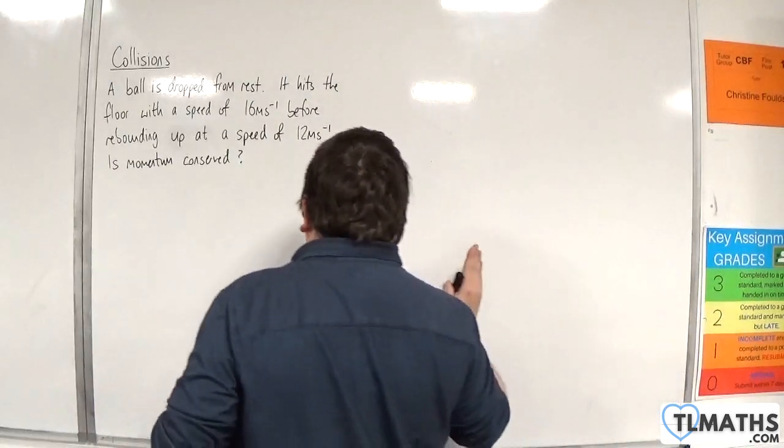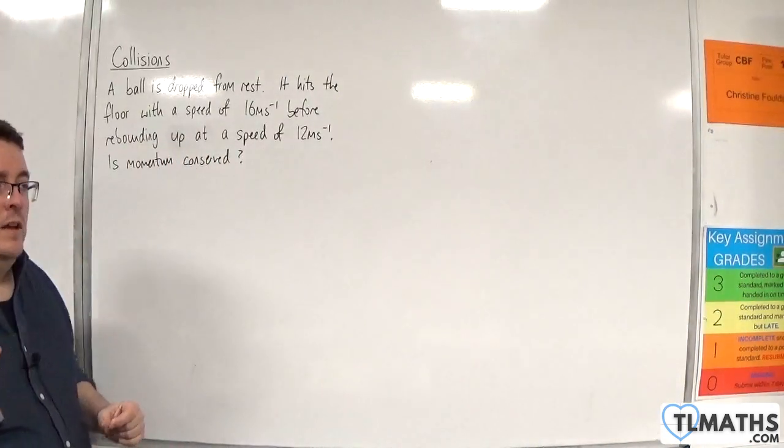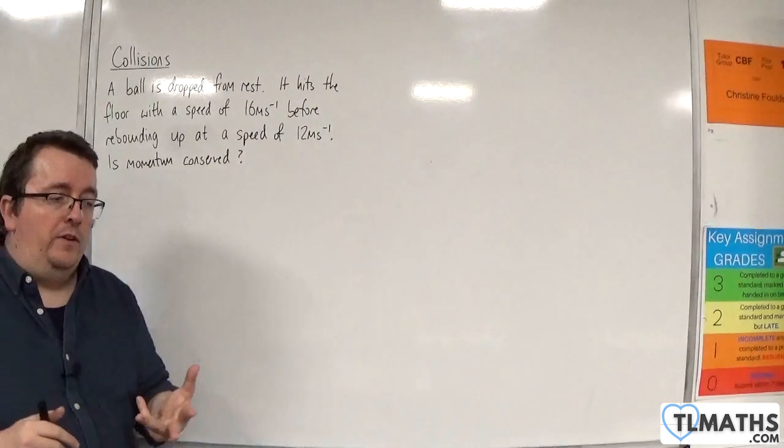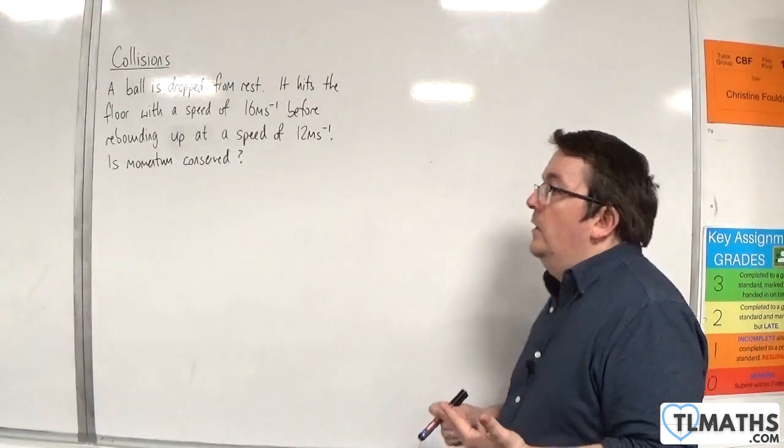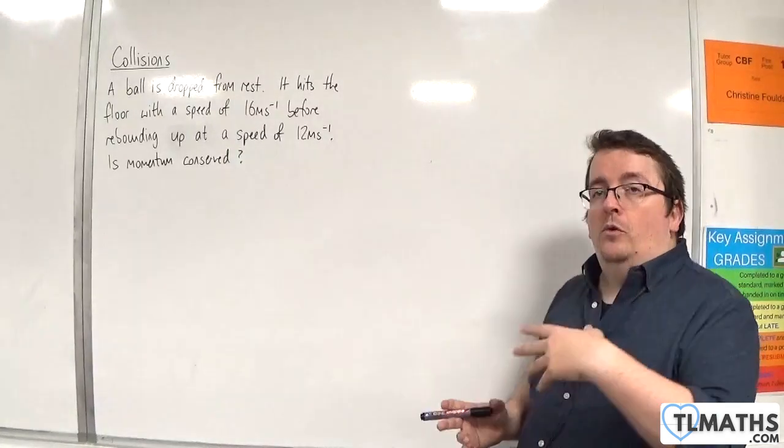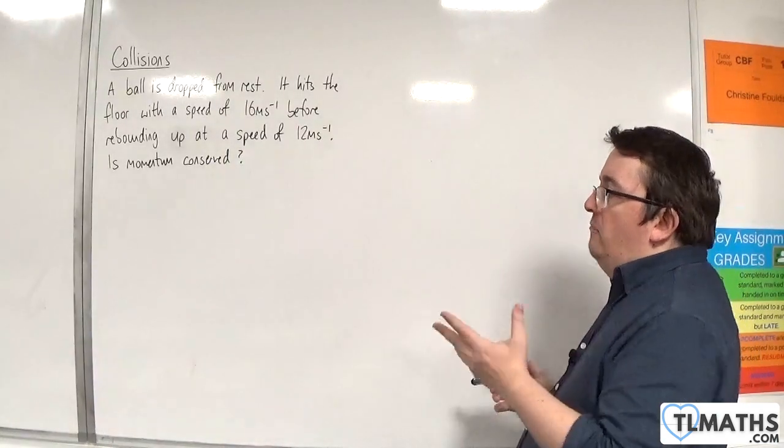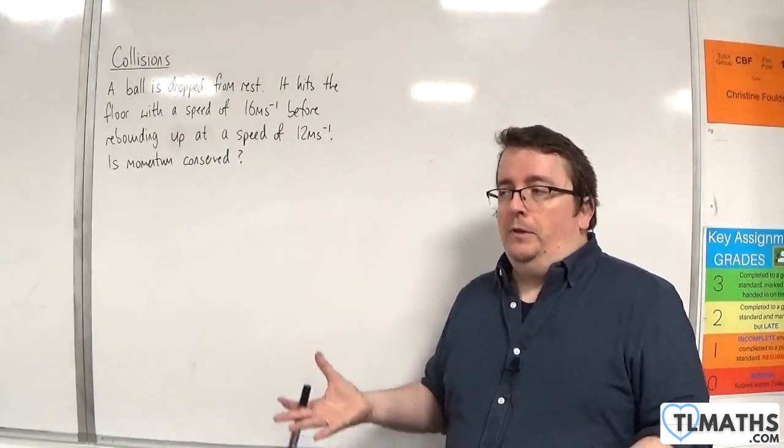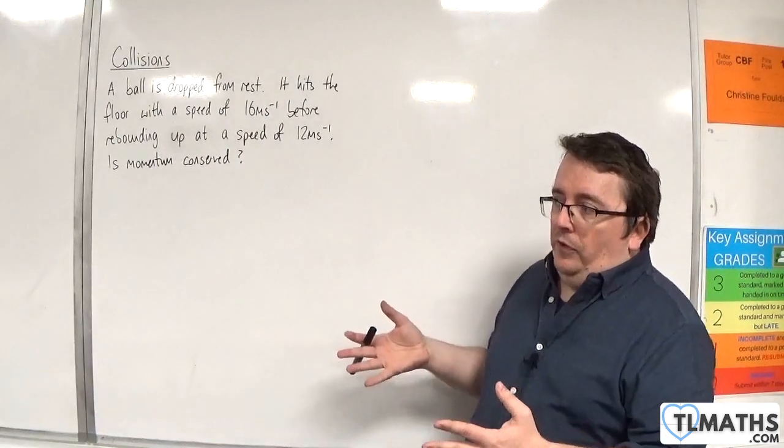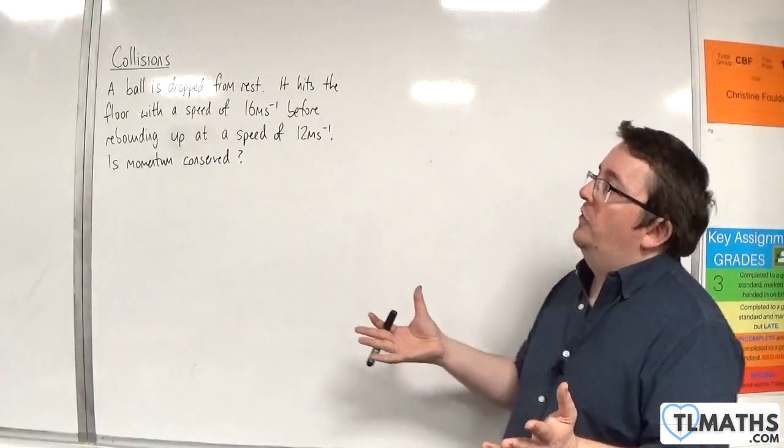The problem is that the mass of the Earth is so large, so it's 5.972 times 10 to the 24 kilos against a tennis ball, for example.